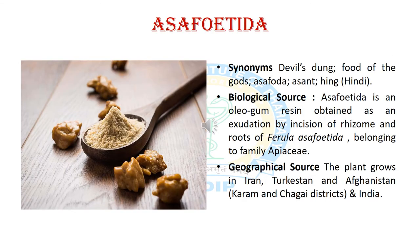Now we will discuss the third resin-containing crude drug, and it is Asafoetida. The synonyms of Asafoetida are devil's dung, food of the gods and hing. The biological source: Asafoetida is an oleogum resin obtained from incision of the rhizome and root of Ferula asafoetida, belonging to the Apiaceae family. The geographical source: this plant is found in Iran, Turkestan, Afghanistan and India.